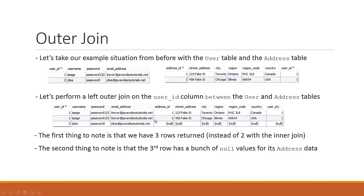The only difference is we need to include all the rows from the left-hand side table since we're using the left outer join. We get all the rows, which means the JDow row is included — represented here — along with the matching data from the right-hand side table. But because user ID two does not have any corresponding rows in the address table, there's nothing to display for the matching result set. So the matching result set is just nulls, because JDow does not have any address information stored in the address table. All that makes sense to display is nulls. That is the left outer join.